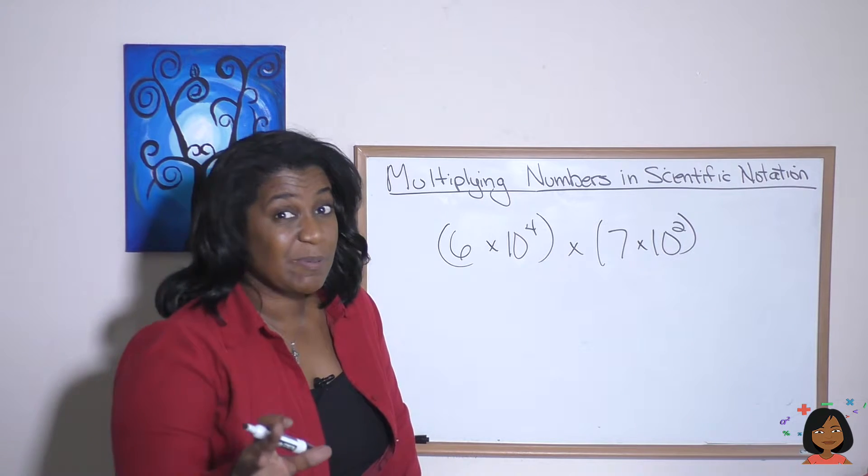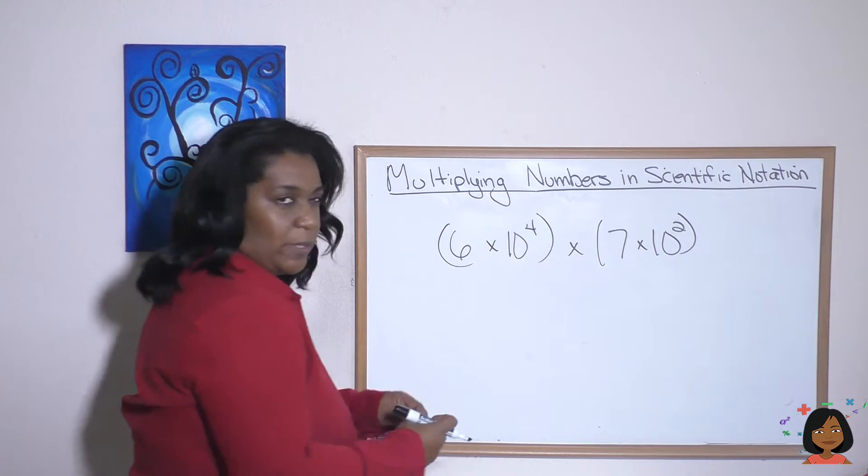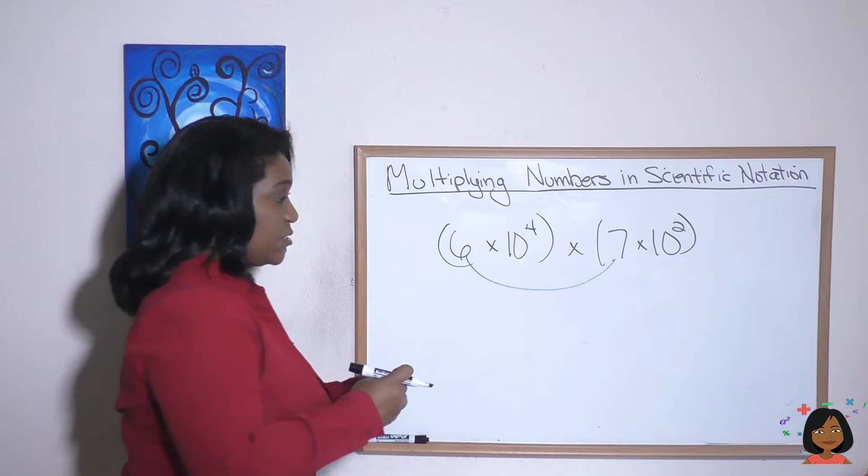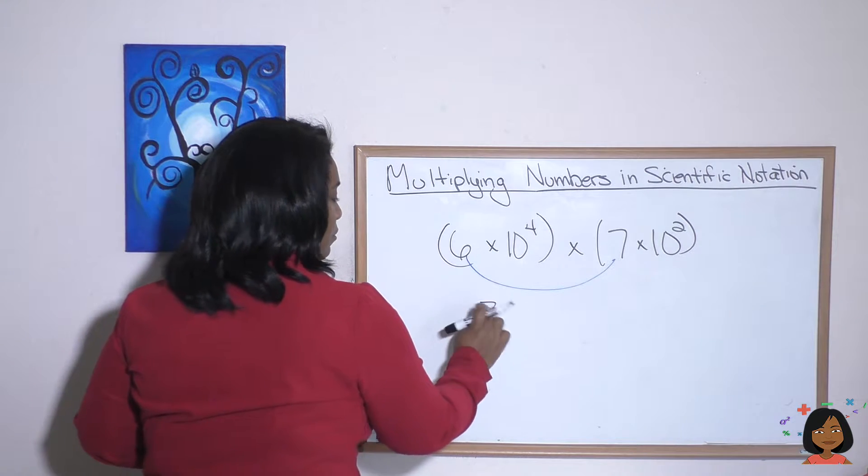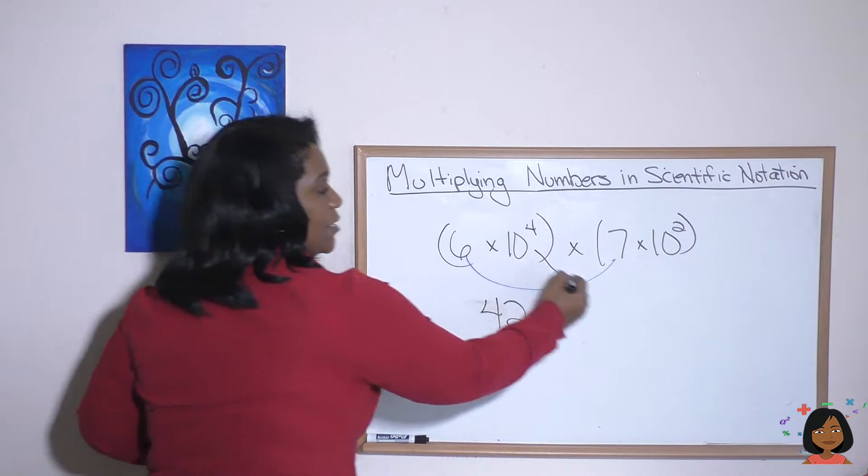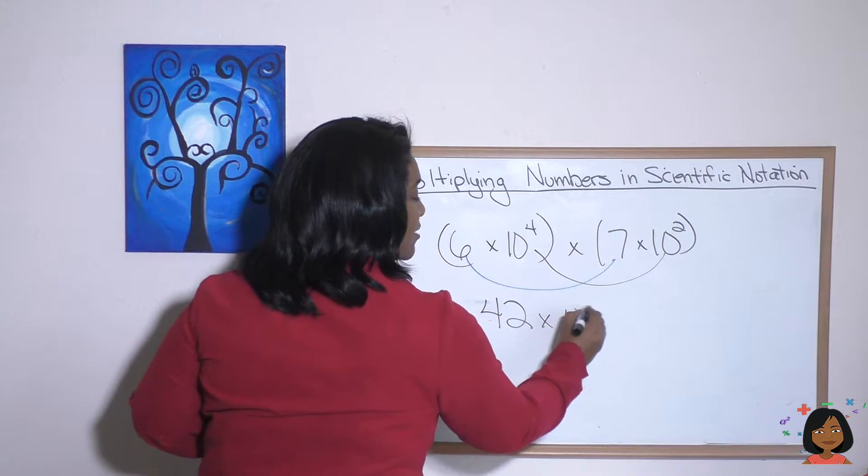Take a look at this example. It's a little bit more difficult than the one I just showed you. The process is still the same, but we're going to add a little something at the end. First, we're going to start with the whole number. 6 times 7 is 42. And then 10 to the fourth times 10 squared is 10 to the sixth.